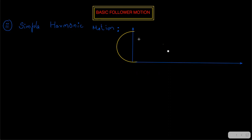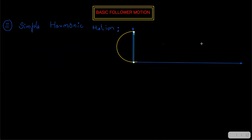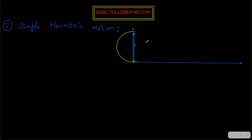We are going to take half of the path while tracing the simple harmonic motion, and the diameter will be equal to the total lift. Lift is the total height raised by the follower. So the lift equals the diameter, which I am going to show from here to here.